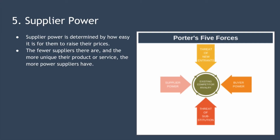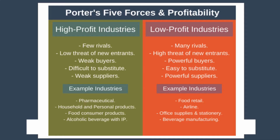Now that we've gone through all five forces, you should have a better understanding of what constitutes a high profit versus a low profit industry. High profit industries have few rivals, low threat of new entrants, weak buyers, products that are difficult to substitute, and weak suppliers. Low profit industries are characterized by the exact opposite. One nuance to be aware of is that you should focus on persistent forces impacting profitability and not temporary forces. For example, a high industry growth rate might make an industry look attractive right now, but when that growth rate disappears in seven or eight years time, is it really still such an attractive industry?